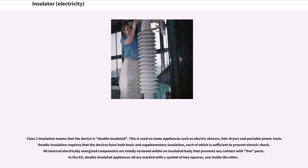In the EU, double insulated appliances all are marked with a symbol of two squares, one inside the other.